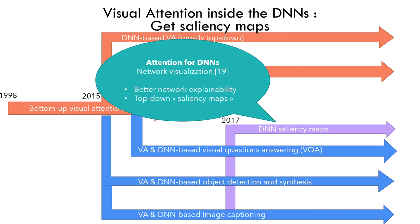I added this new branch of saliency maps in deep learning models. It's a different color because it's not exactly the same as the other applications — it can use several applications, and attention here will not help the model to be better; it will just explain how the model works. However, people in this branch know people in the GradCAM-related branch, while people from the biological attention community and the DNN community do not really know each other well.